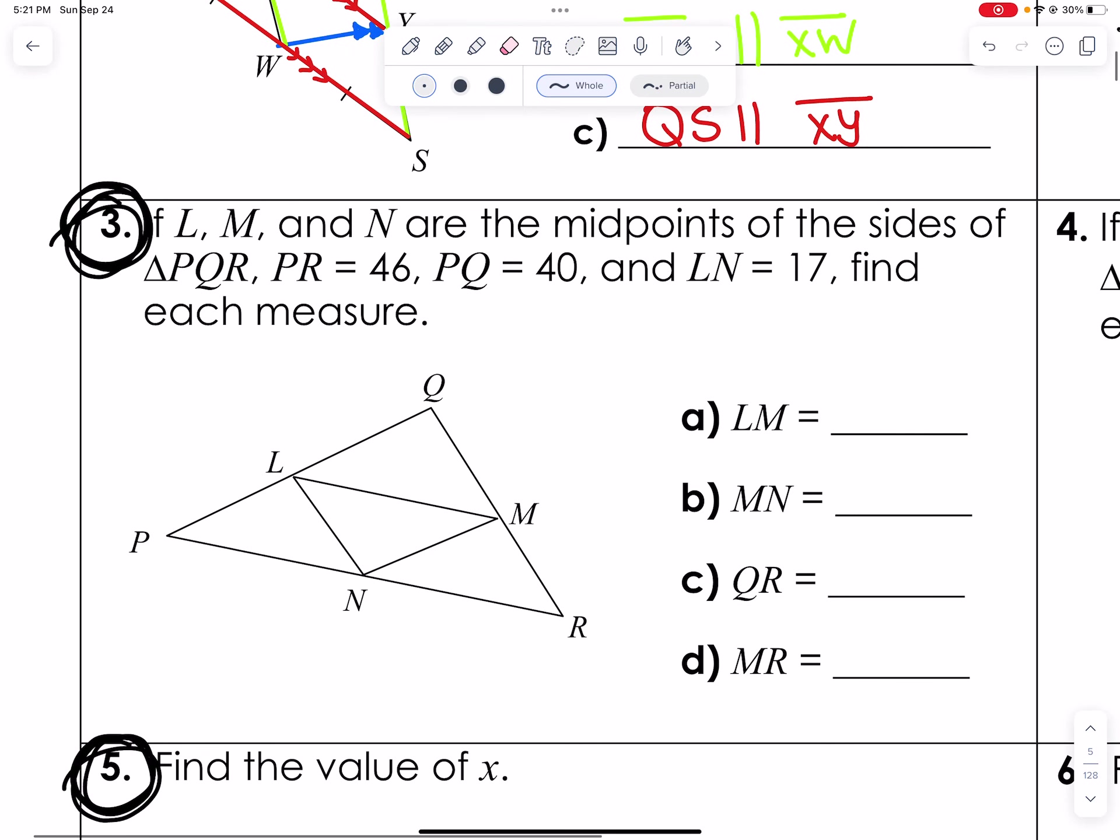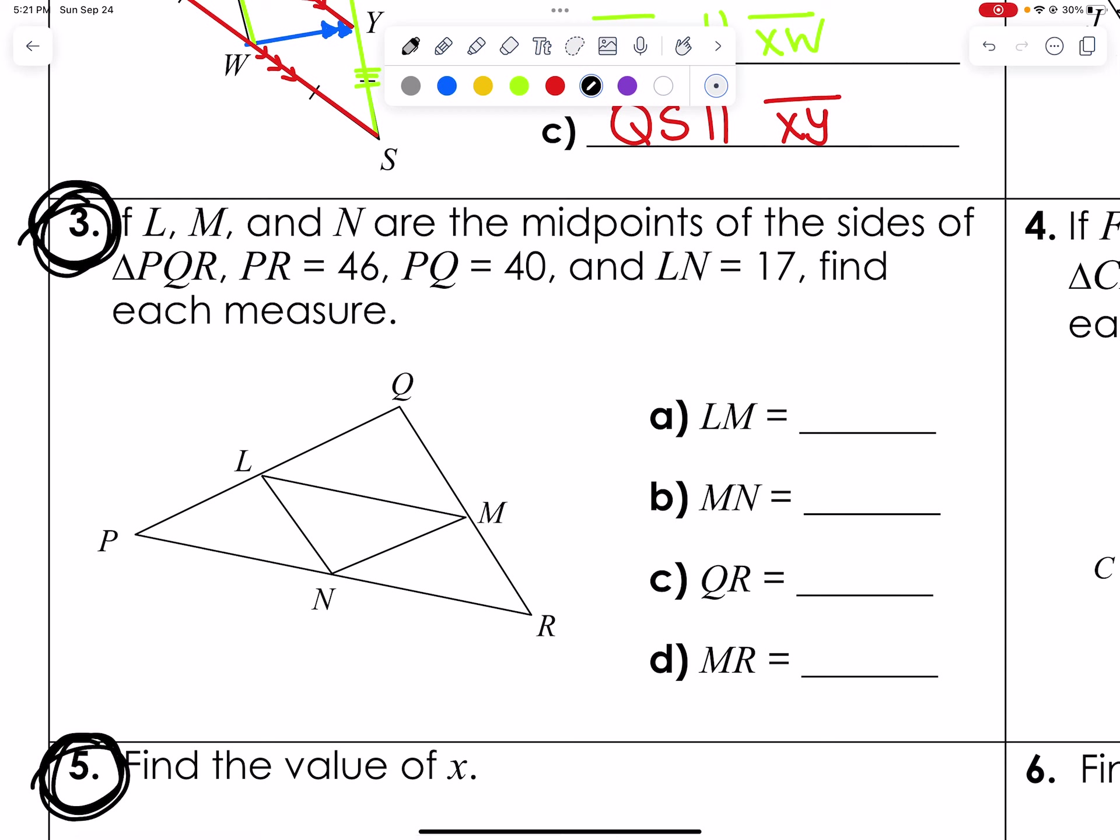Next problem we're going to do together is number three. So here we start diving deeper into our understanding. If L, M, and N are the midpoints of the sides of PQR, and PR, this segment here, equals 46, PQ, this segment here, equals 40, and LN equals 17, find each measure.